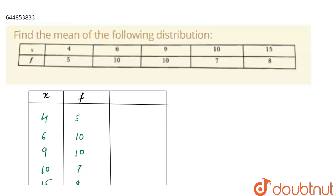So here we have the question which says find the mean of the following distribution. The given distribution shows x and f values. We know that for this type of distribution, mean equals sigma fx upon sigma f, that is summation of f into x upon summation of frequency.